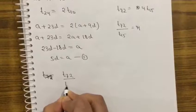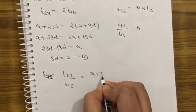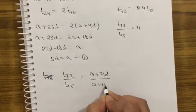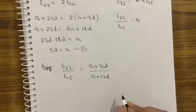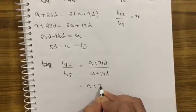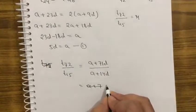T72 upon T15. What is T72? A plus 71d. And a plus 14d.